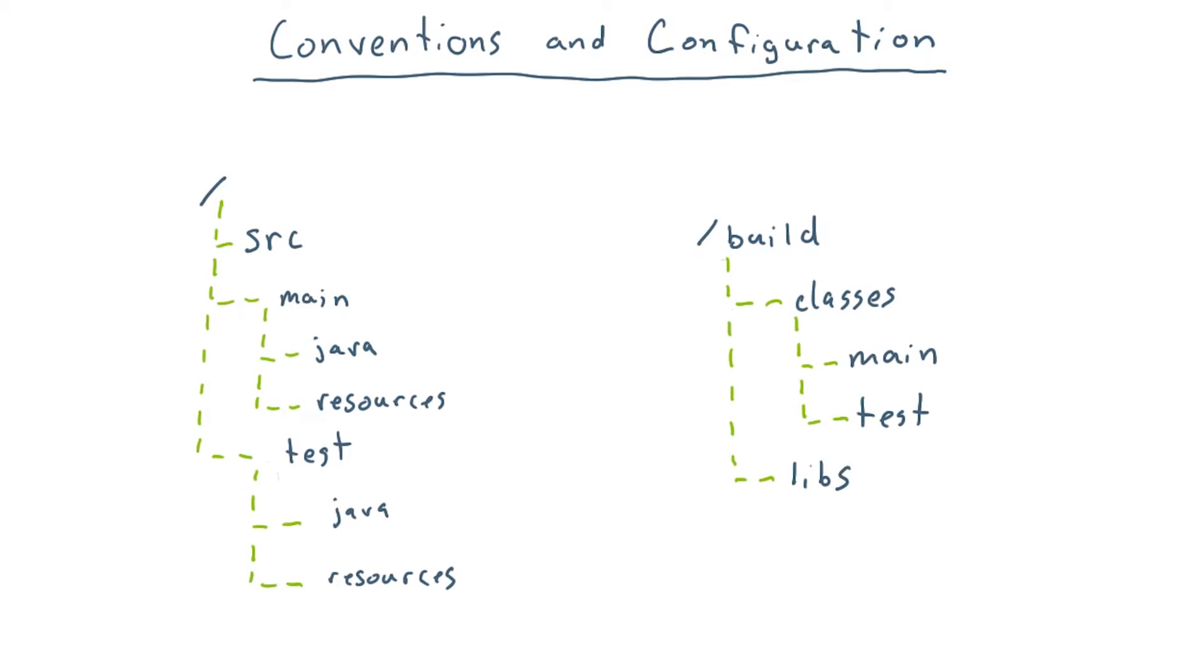Gradle also does its best to separate capabilities from opinions. The Java plugin actually first applies the Java base plugin. The Java base plugin is what provides the ability to compile Java and adds the concept of source sets to the project. However, it doesn't add any source sets in particular. The opinionated conventions are applied by the Java plugin.